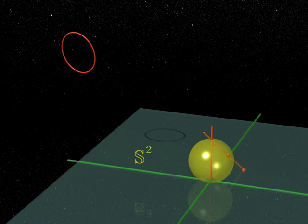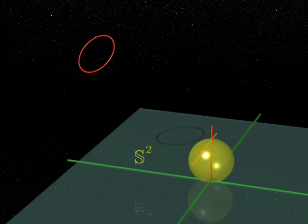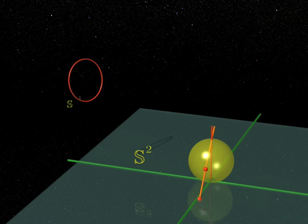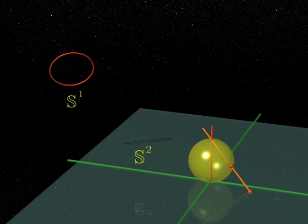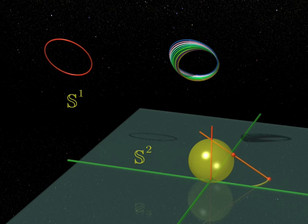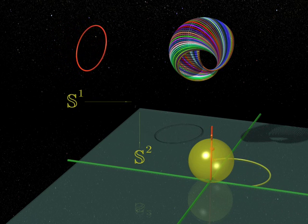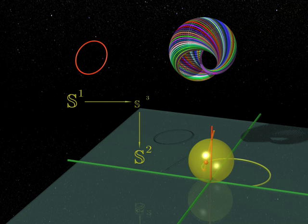So we have a circle for each point on the two-sphere. But a circle is a sphere of dimension one, isn't it? All these circles fill up the three-sphere. Each point on the three-sphere belongs to a single circle, and therefore defines a point on the two-sphere.